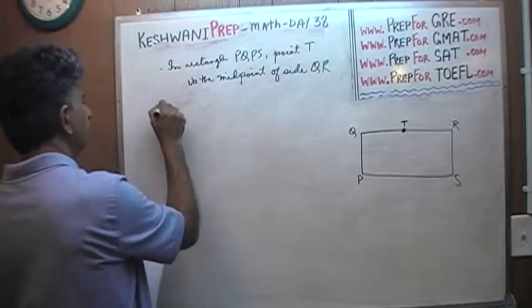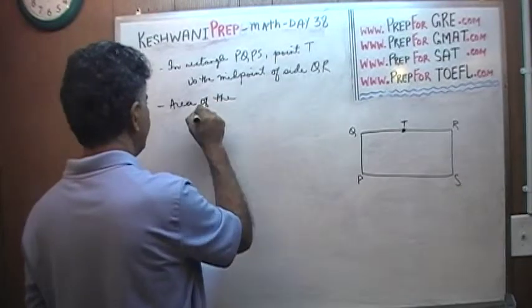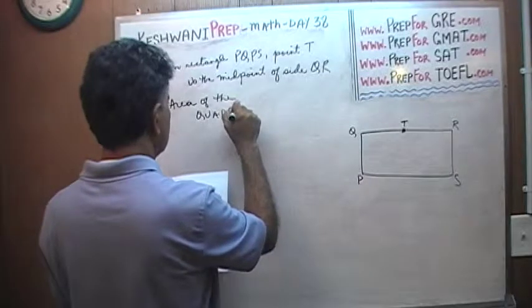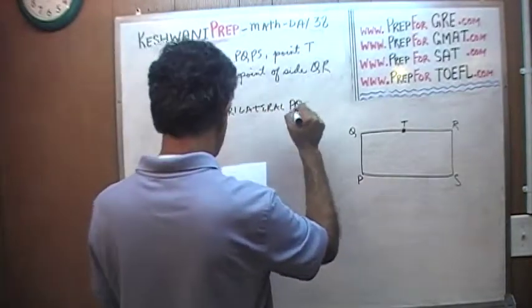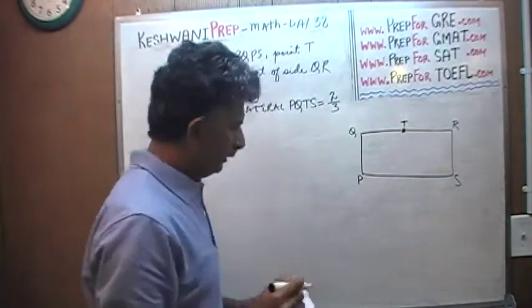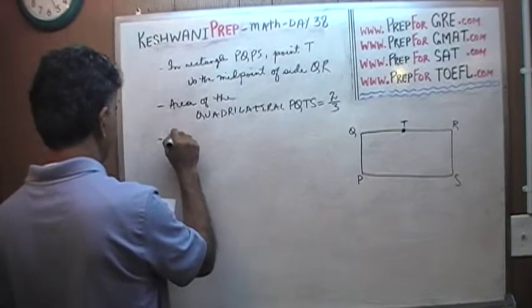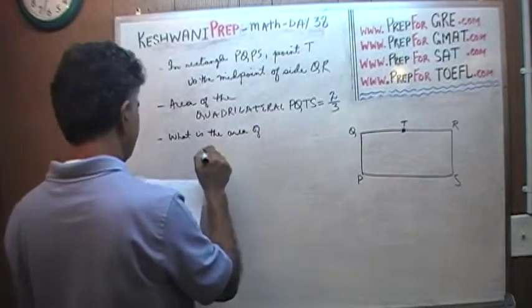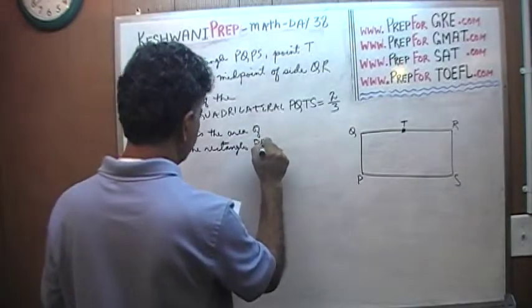We are told that the area of the quadrilateral PQTS is two-thirds. PQTS. Let me show you the PQTS. Before I do that, let's find what is the area of the rectangle PQRS.